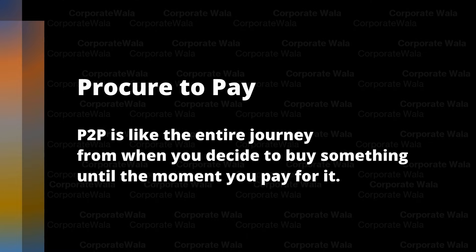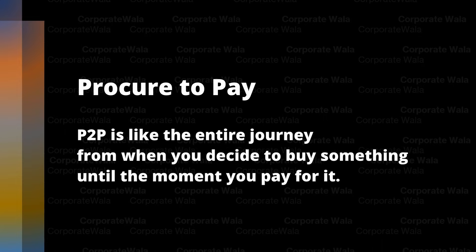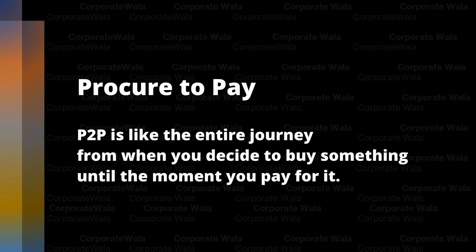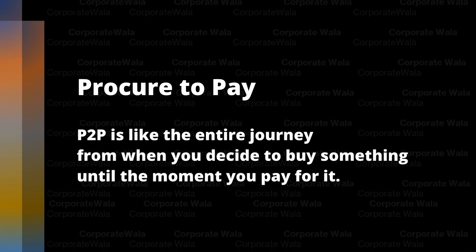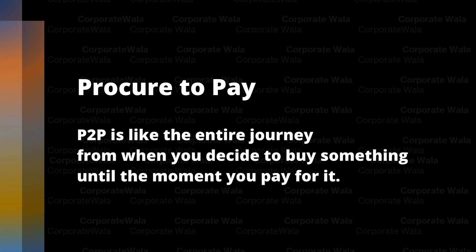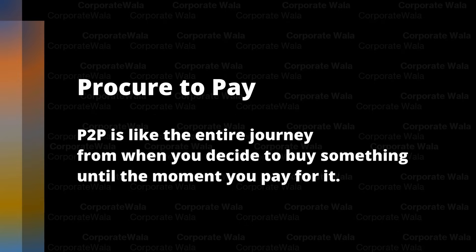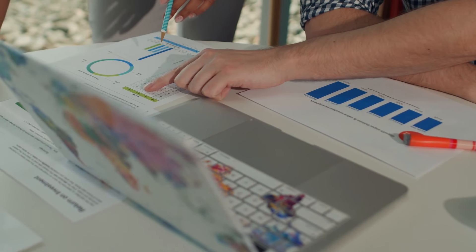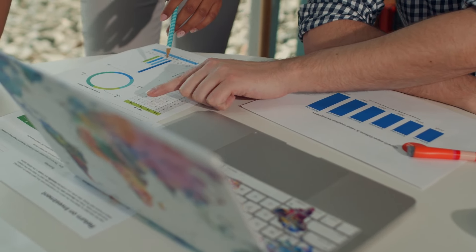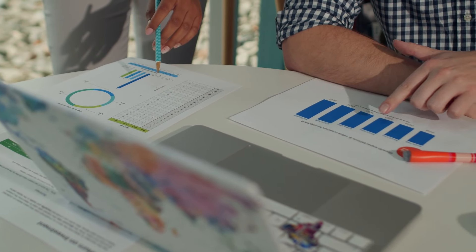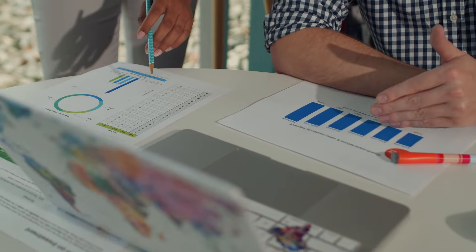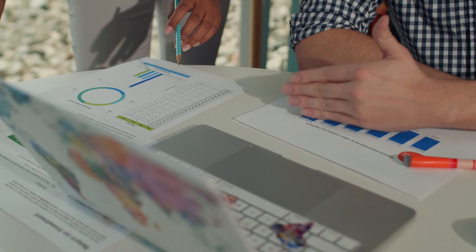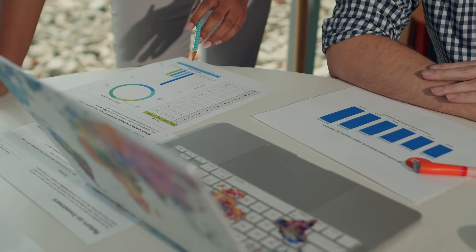P2P, or Procure to Pay, is the entire cycle of activities involved in the purchasing of goods or services. It starts with the identification of a need within the company. For example, let's say an employee realizes they need new office supplies to perform their duties effectively. This triggers the P2P process.